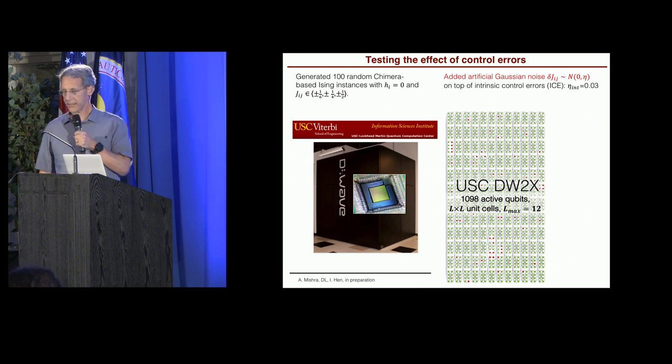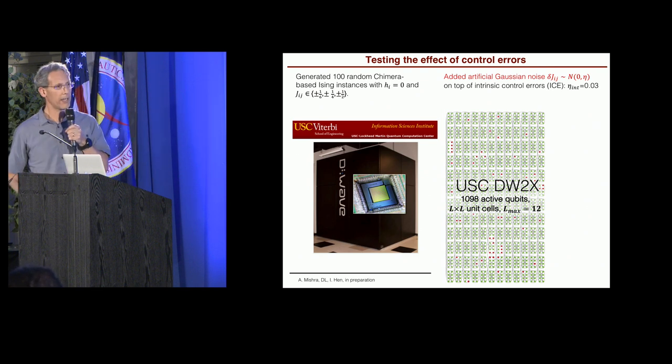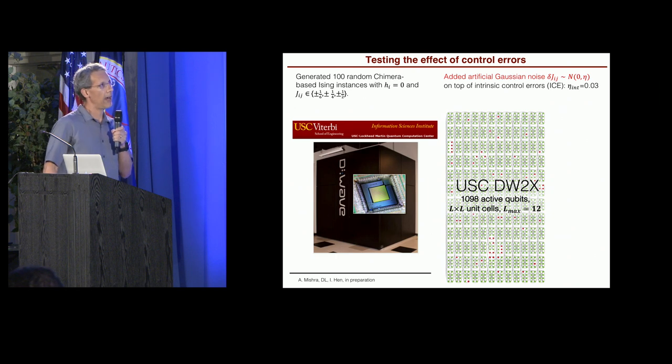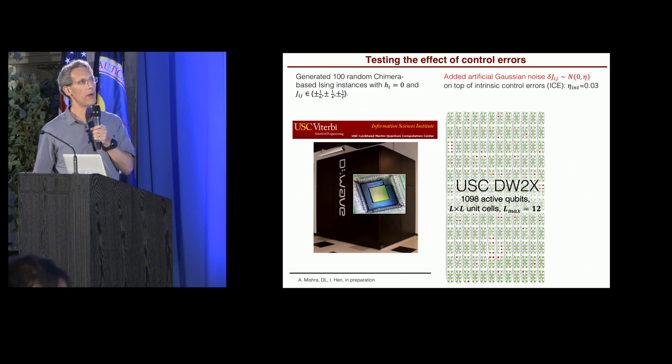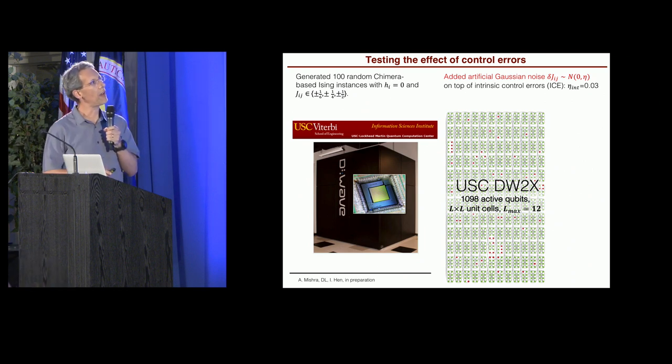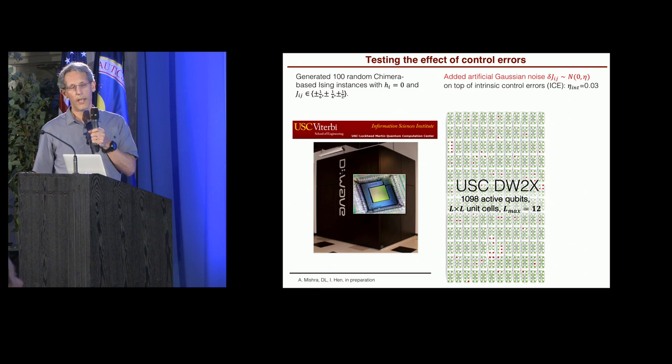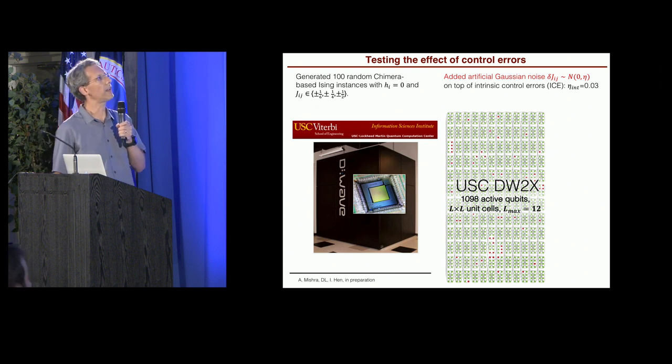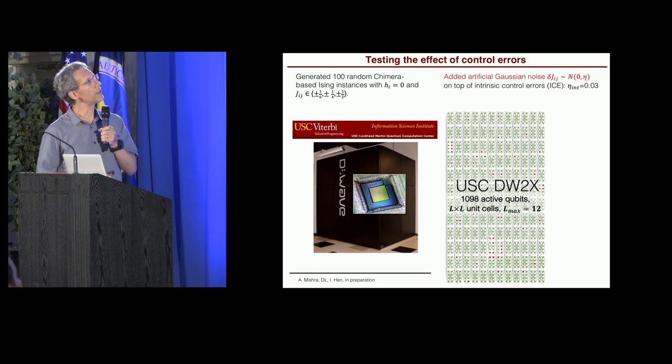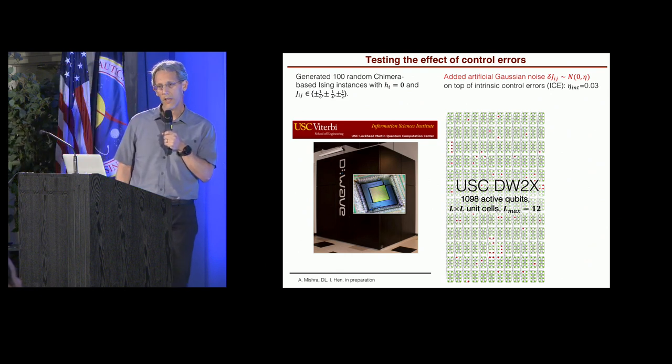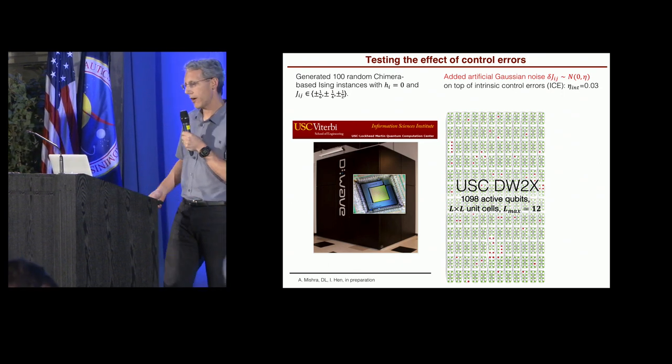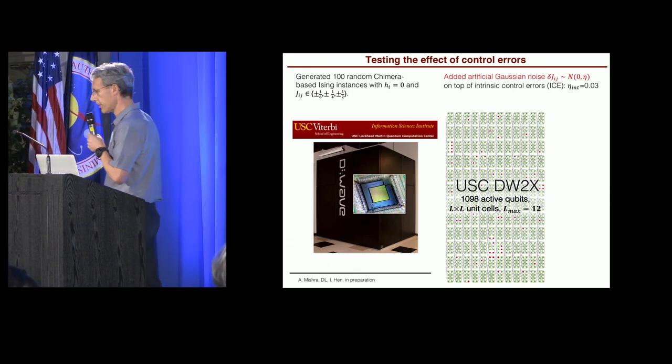So to answer that, we decided to, we as Anurag and Itai and myself, to run experiments. And these experiments were done on our USC-based D-Wave 2X machine. It has 1,098 active qubits. It has up to 12, it's a 12 by 12 unit cell lattice. And so what we did was we generated 100 random Chimera-based instances with zero local fields. And couplers that are in this range, plus minus one-sixth, one-fourth, one-half.